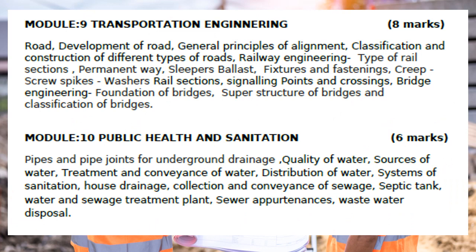The last two modules are transportation and public health and sanitation. Transportation engineering includes: road development, general principle of alignment, classification and construction of different types of road. Railway engineering includes: types of rail sections, permanent way, sleepers, ballast, fixtures and fastenings, creep, screw spikes, washers, rail sections, signaling, points and crossings. Bridge engineering includes: foundation of bridge, superstructures of bridge, and classification of bridge. Transportation covers road, rail, and bridge.